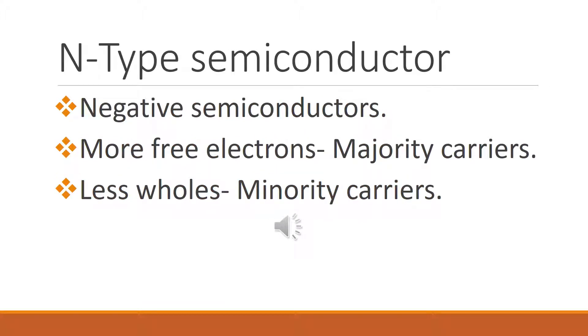N-type semiconductors are negative type semiconductors with a greater number of electrons, meaning electrons are majority carriers and holes are minority carriers.